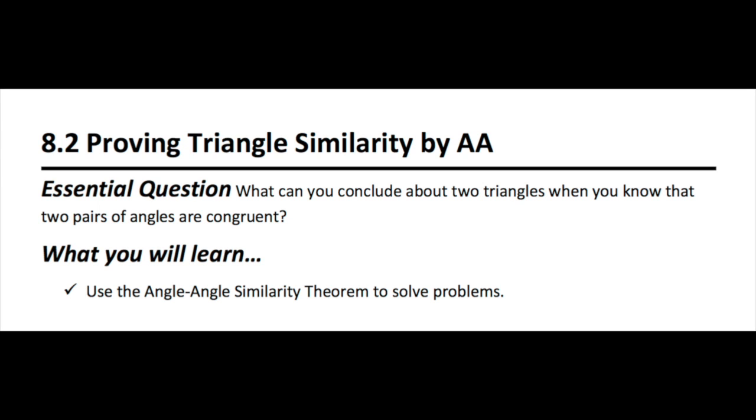8.2, Proving Triangle Similarity by Angle-Angle, or AA. Essential question is what can you conclude about two triangles when you know that two pairs of corresponding angles are congruent? What you will be expected to learn how to do is to use this angle-angle similarity theorem to solve problems.